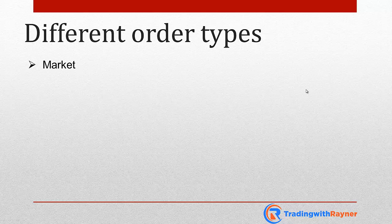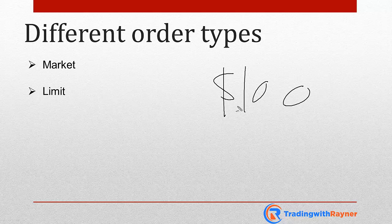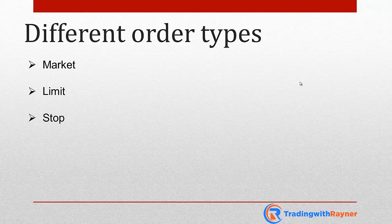The second type of order is called a limit order. It basically means that you want to buy a financial security only if it reaches a certain price. For example, if a stock is currently trading at $110 but you think $110 is too expensive, you can place a limit order at $100. If the stock comes down to $100, you will buy it at that price.